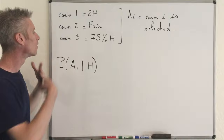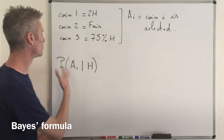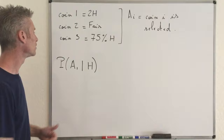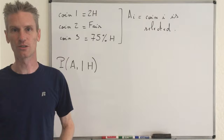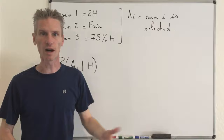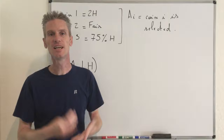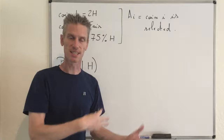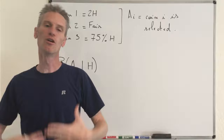We also know that P(Ai) are all equal to one-third, because you choose the coin at random uniformly — each coin is equally likely to be selected. This motivates the use of Bayes' formula. The partition we are going to use is clearly A1, A2, A3. It's clear that exactly one of the three should occur at step one, so A1, A2, A3 is a partition of the sample space. Given this information, you can compute the probability of heads.